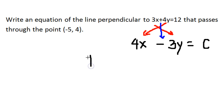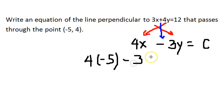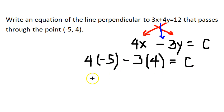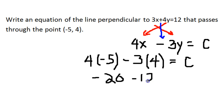So now we have 4, and we replace the x by negative 5. So 4 times negative 5 minus 3 times the y-coordinate, which is 4, and that will be equal to c. To simplify this, we have negative 20 minus 12 is equal to c.